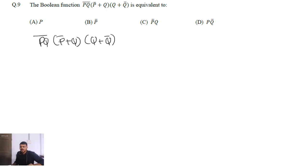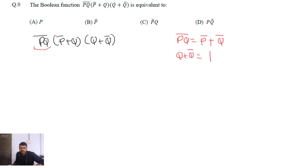Now the first two terms you can simplify by De Morgan's theorem. According to De Morgan's theorem, (pq)̄ will be equal to p̄ + q̄. Also we know from boolean algebra that q + q̄ is equal to 1. So this term equals 1 and (pq)̄ equals p̄ + q̄.